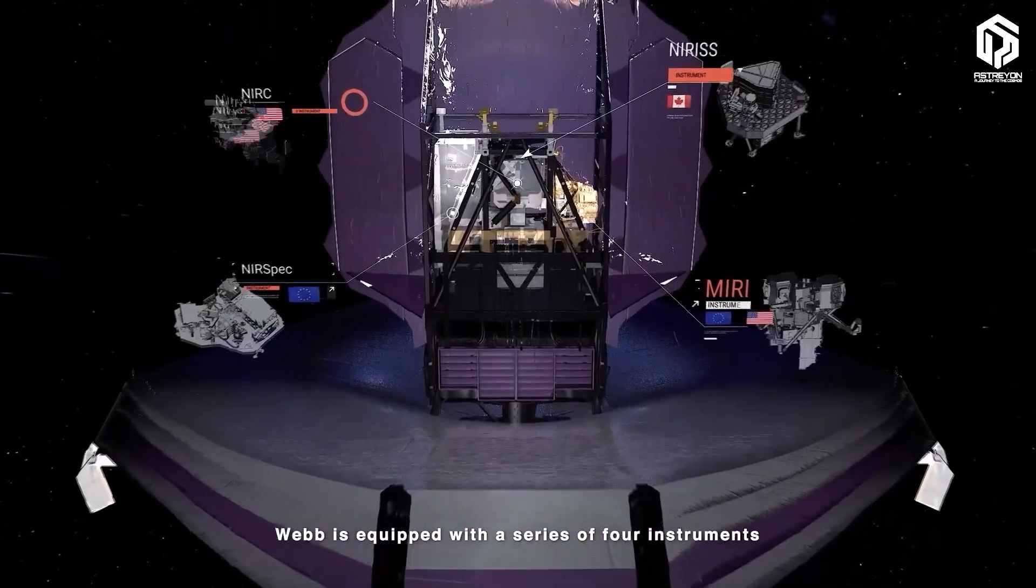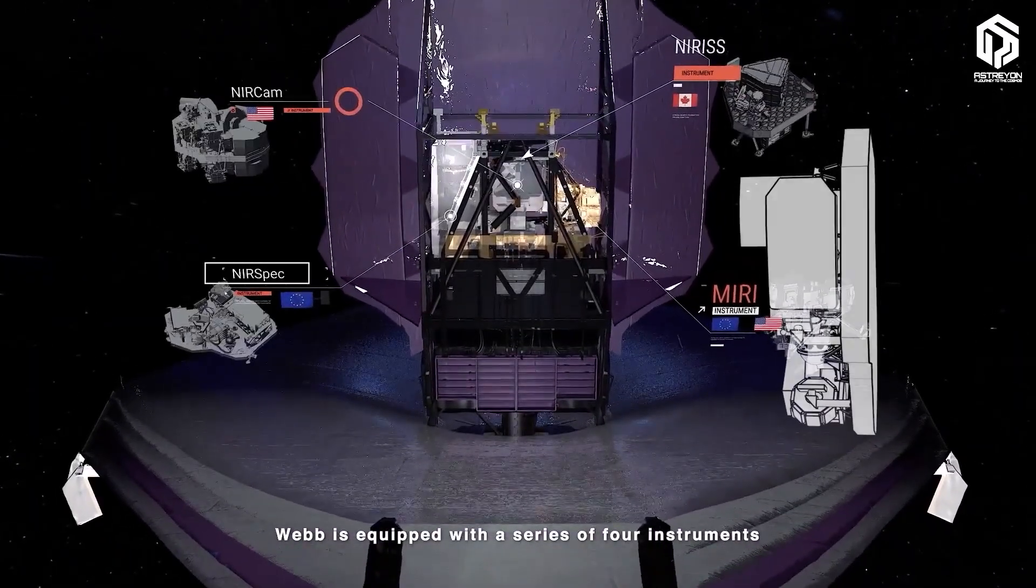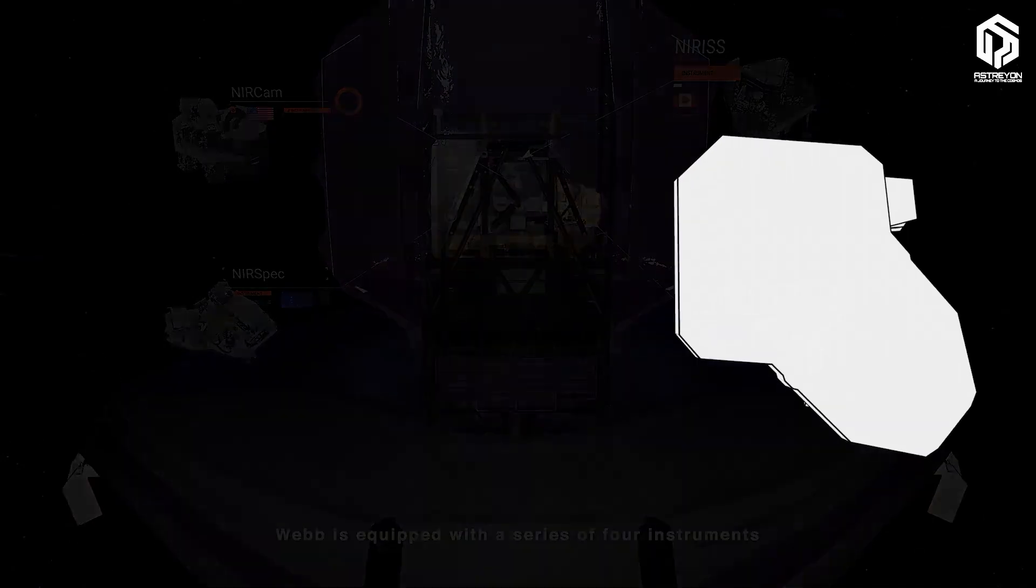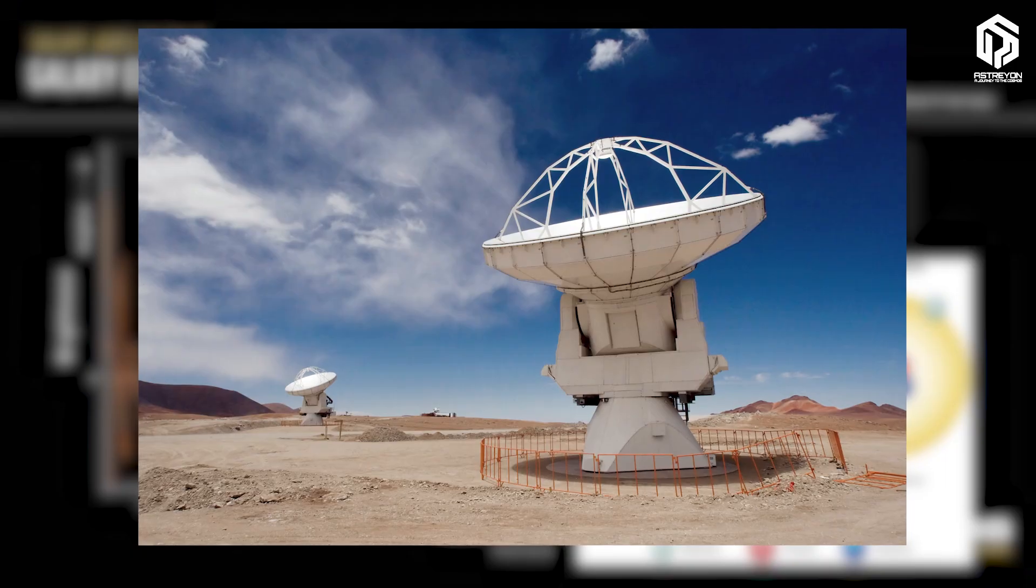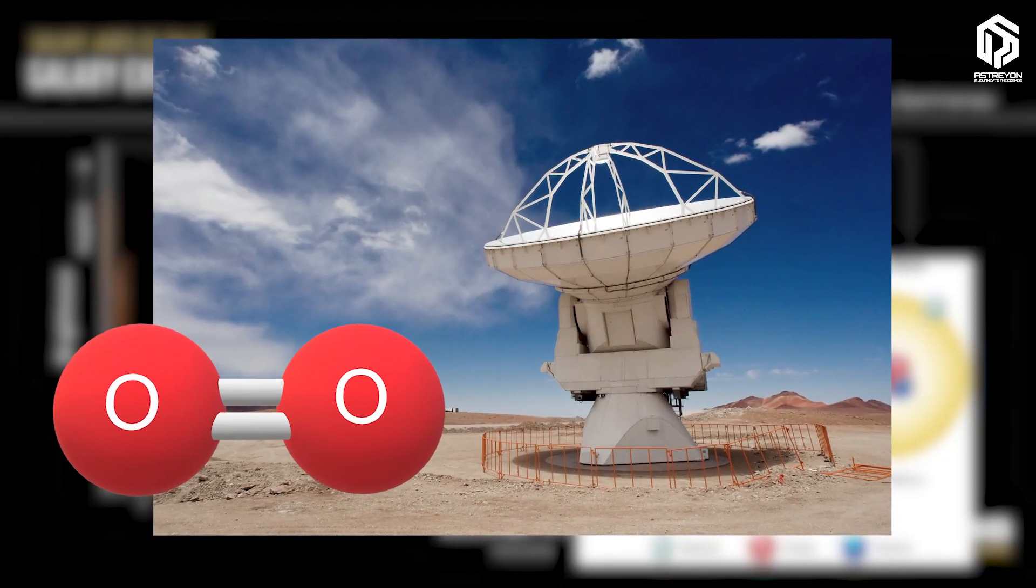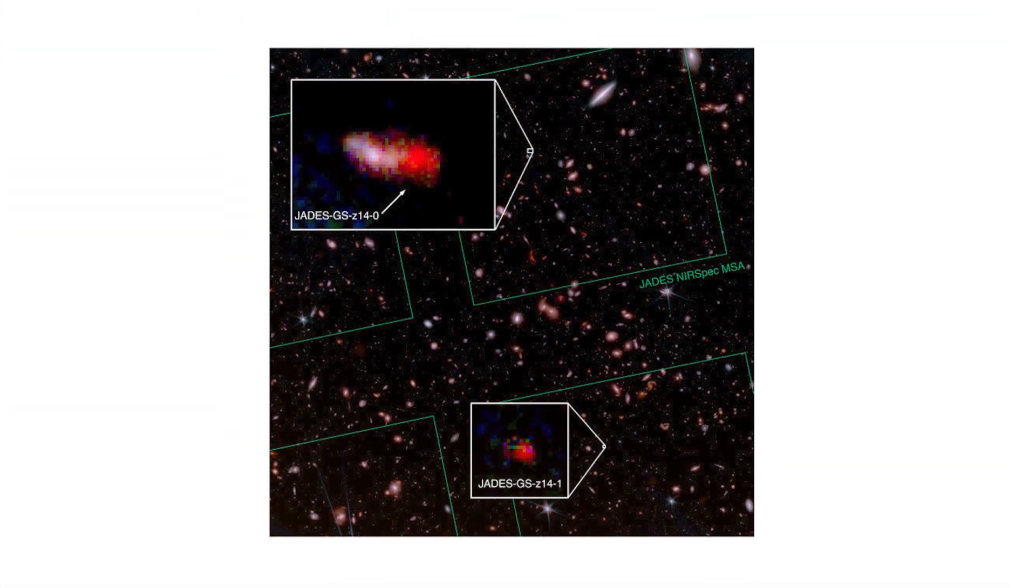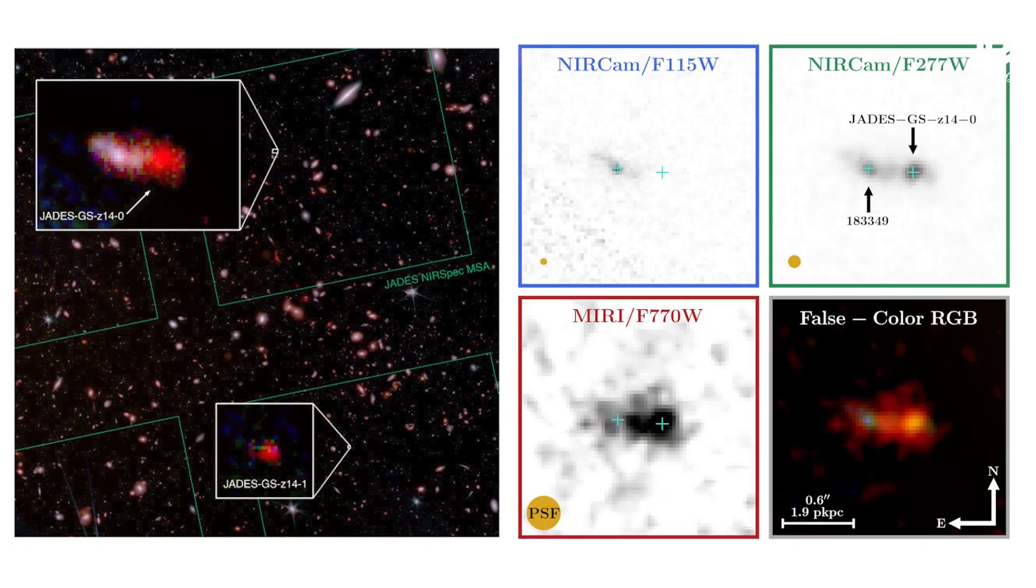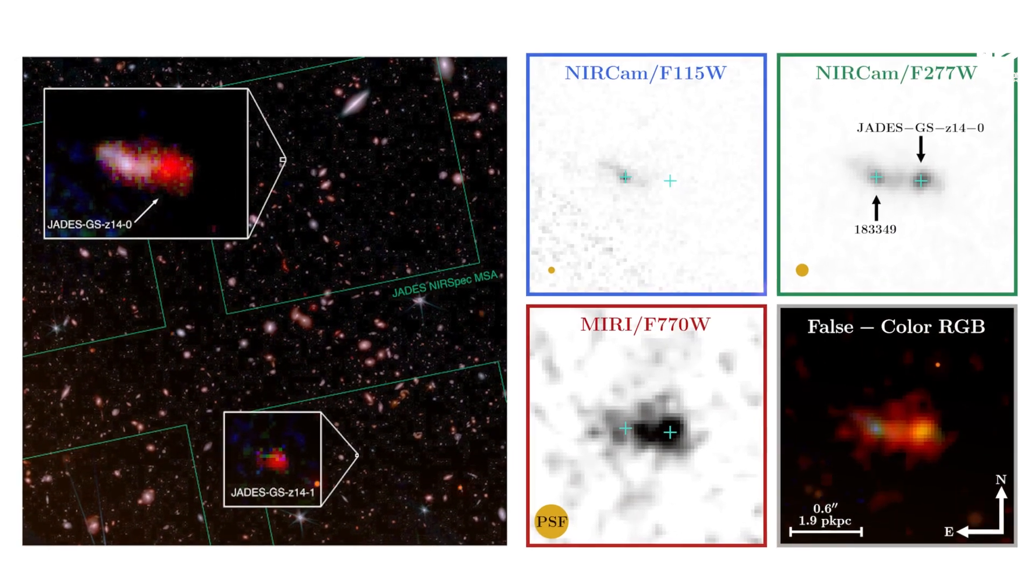JWST with NIRSpec revealed its chemical composition, dominated by hydrogen and helium, but ALMA in March 2025 found traces of oxygen in it. Oxygen indicates that first-generation stars formed quickly and produced heavy elements, aiding our understanding of cosmic chemistry.